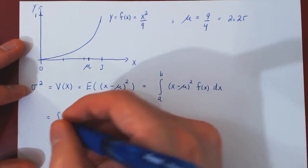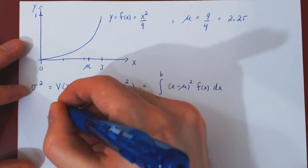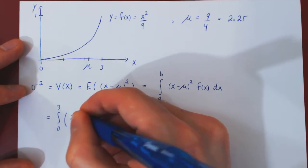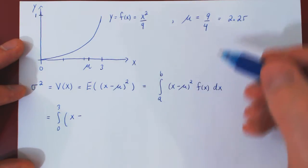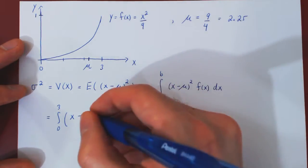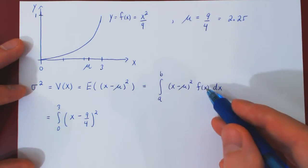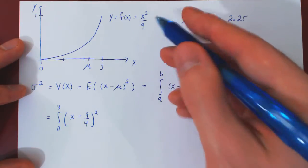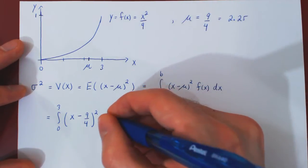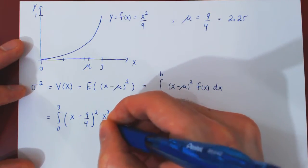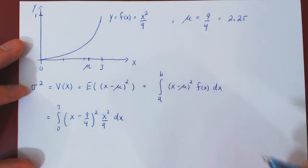So, a is 0 and b is 3, x minus the mean, I'll keep it as a fraction, 9 quarters, times the density function, x squared over 9, dx.